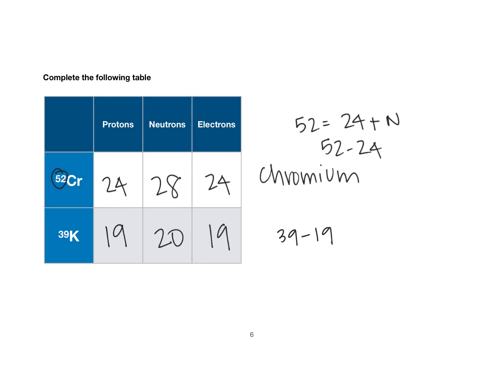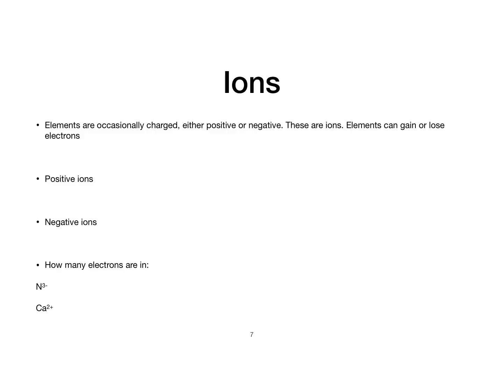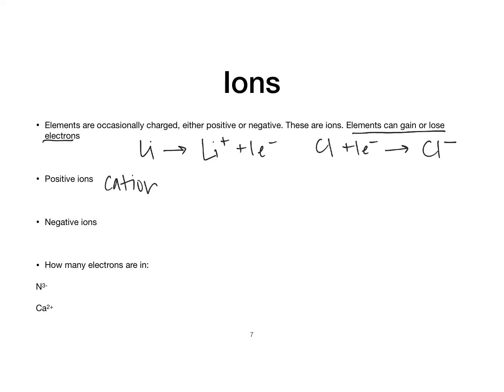So far we've looked at neutral atoms. We want to think about what happens if an element gains or loses electrons. We're going to encounter charged species — those are ions — and they will either be negative or positive. Elements can gain or lose only electrons. For example, lithium can lose one electron to become lithium plus. Chlorine can gain one electron to become chlorine minus. A positive ion is a cation, and a negative ion is an anion.